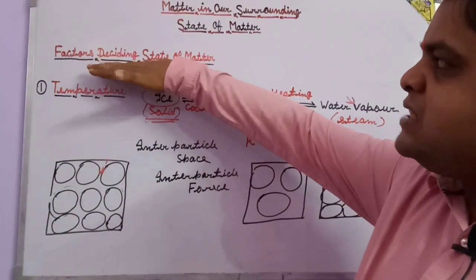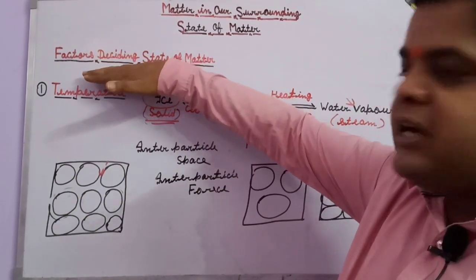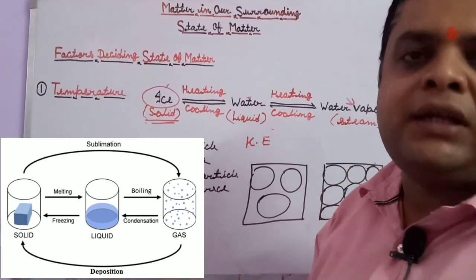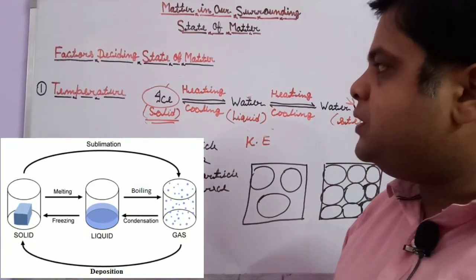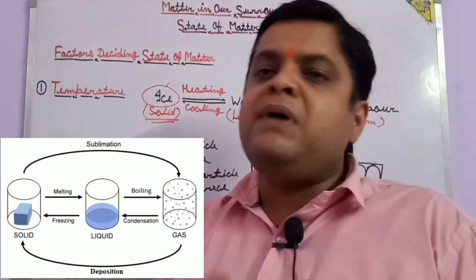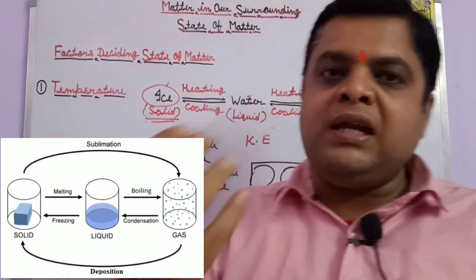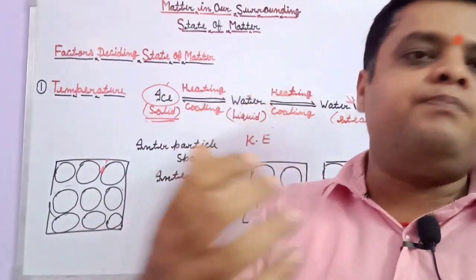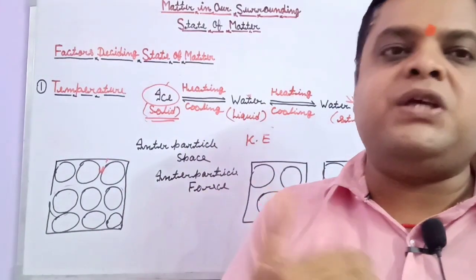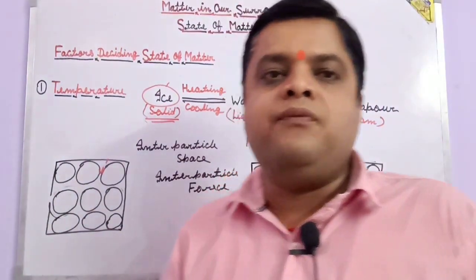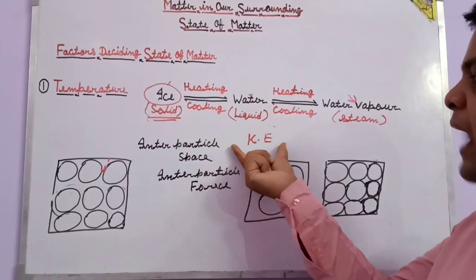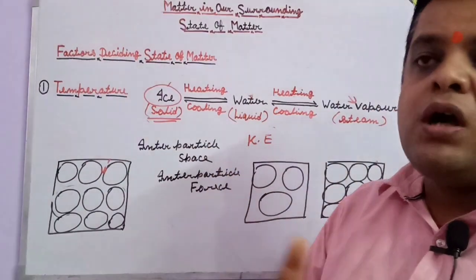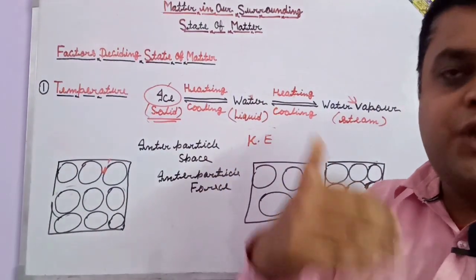Today we discuss the factors deciding the state of matter. We consider three conditions: temperature, pressure, and inter-particle conditions. First, about temperature — in simple language, temperature tells us the hotness and coldness of a substance. In chemistry, temperature is also discussed in terms of kinetic energy, because every state can be changed from one to another by the condition of kinetic energy.